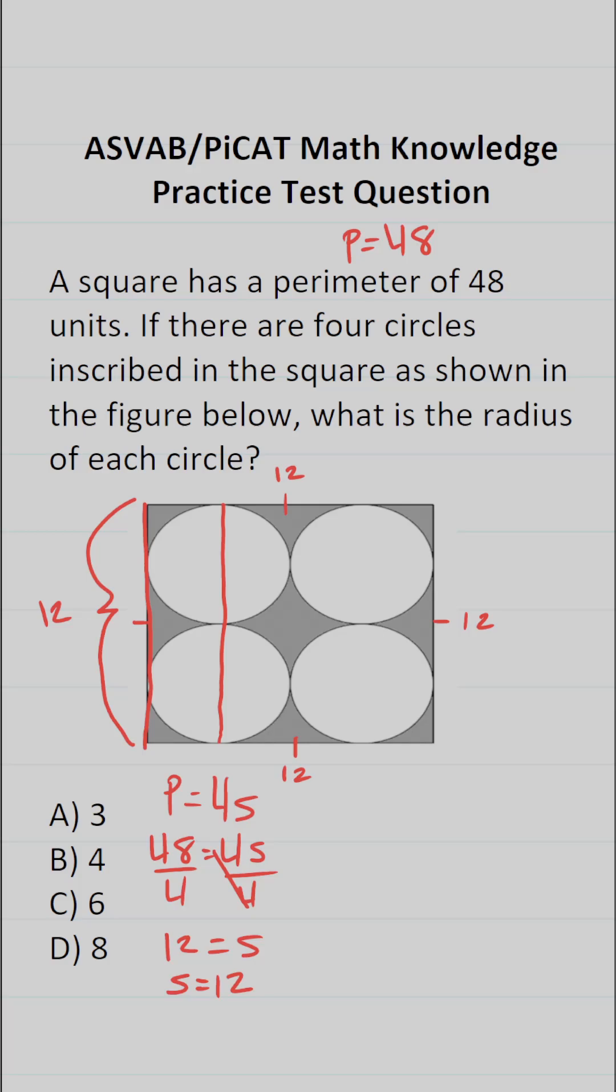What is the radius of a circle? The radius of a circle is defined as the distance from the edge to the center of a circle. So that would be the radius of that circle.